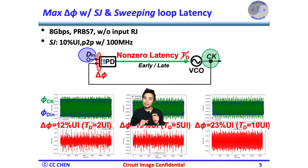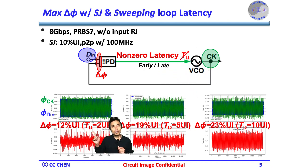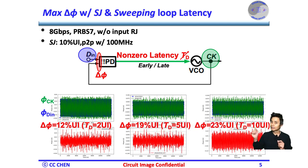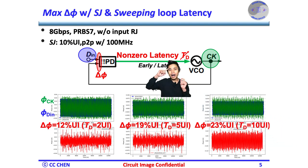If we sweep latency images of 2 UI, 5 UI, 10 UI, we could see the phase error between the input data and output clock is increased and more than twice the input phase movement. Why is the phase error more than twice the input phase movement? Think about the out-of-phase image for 5 seconds.